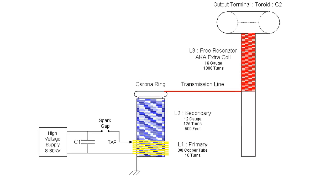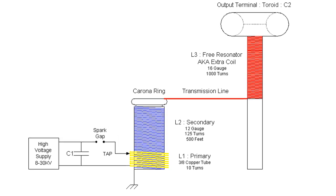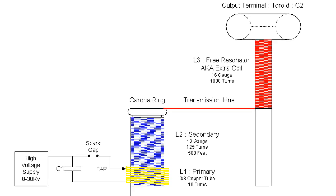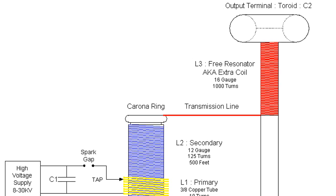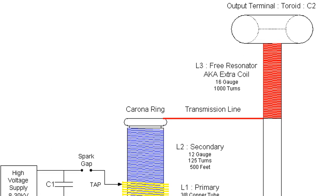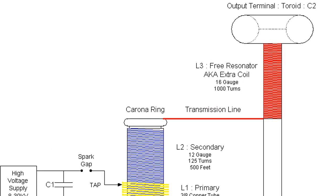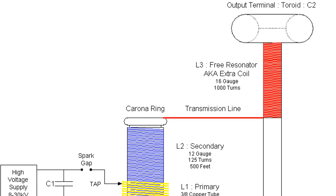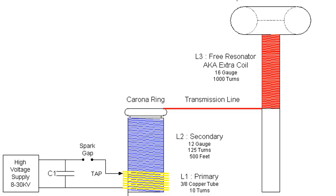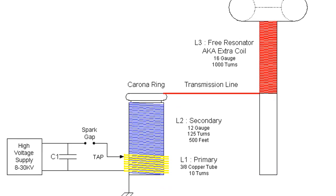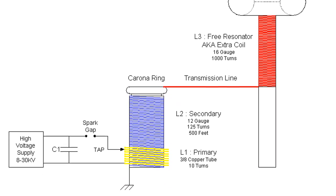Nikola Tesla published a paper in the electrical world entitled A New System of Alternating Current Motors and Transformers in which he proposed a new type of AC motor that would become known as the Tesla coil. This device operated on the principle of resonance, using a high frequency AC current to create a rotating magnetic field that could be harnessed to generate electricity.